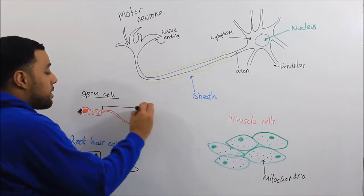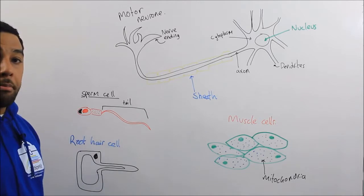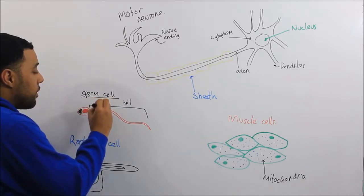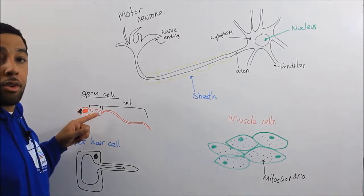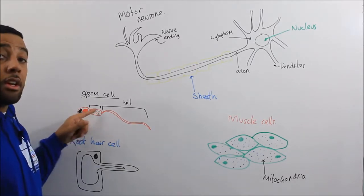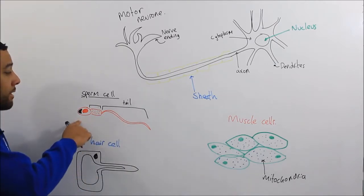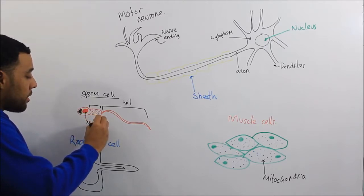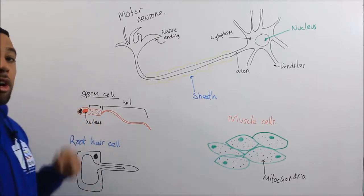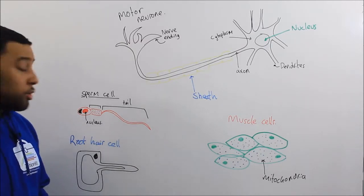It has a tail that enables it to swim. It has a middle section here. And in this middle section it's packed full of mitochondria, giving it energy for that swimming motion. And in the head of the sperm cell we have a nucleus. And that nucleus will contain half the amount of chromosomes required to make a human being.